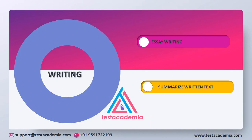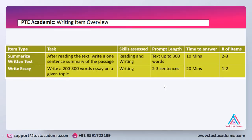The next module is writing. It has two question types: essay writing and summarize written text. Summarize written text involves reading a passage and writing a one-sentence summary in 10 minutes. Essay writing gives you 20 minutes to write a 200 to 300 word essay on a given topic.